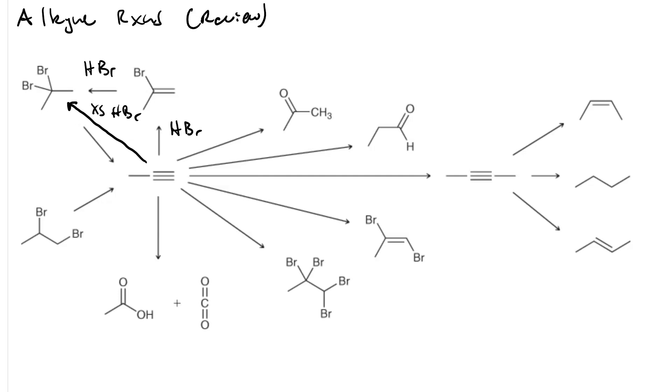To go from the geminal dihalide back to the alkyne, we'd do two steps. First, excess sodium amide, and the solvent for that is ammonia. And the second step is a workup with water.